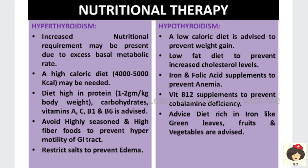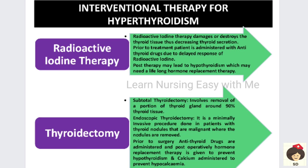In hypothyroidism, the patient should take a low-calorie, low-fat diet to prevent weight gain, since fat metabolism is impaired. Iron and folic acid should be supplemented because the patient can develop anemia, and vitamin B12 in case of cobalamin deficiency. The patient should also be advised to eat foods rich in iron, such as green leafy vegetables.